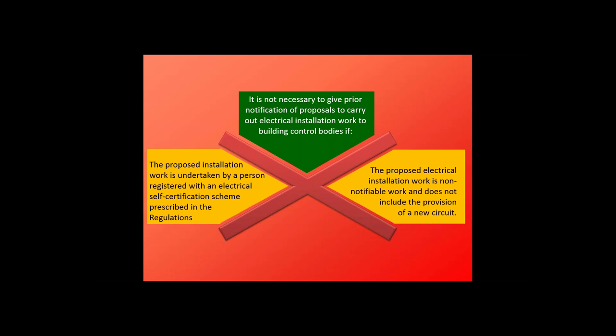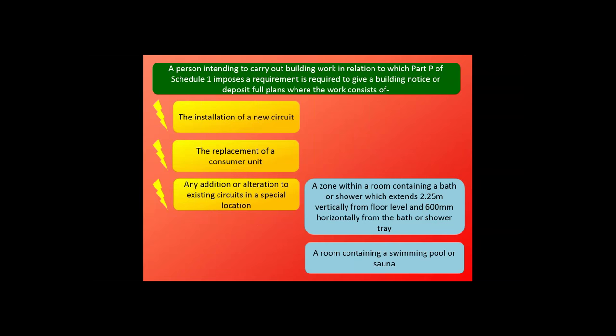However, some work does need notification. That work is basically wherever we're installing a brand new circuit, or if we're replacing a consumer unit — those are obviously key risk areas and fairly major works. Also, any work that involves alteration to a circuit in a special location needs notification. Special locations are defined in the approved documents as generally those where there is a higher level of risk, such as rooms with a bath or shower, where we create a zone 2.25 meters high and 6 meters wide from the water source. Similar provisions apply to swimming pools, saunas, and the like.